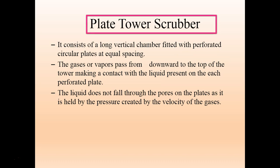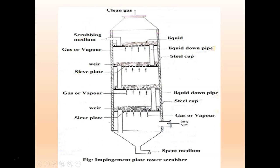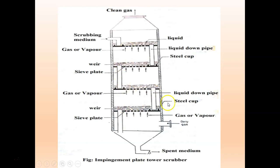Next is the plate tower scrubber. It consists of a long tower with several circular plates with perforations. The golden circular plates have gaps between them which are the perforations, or pores. Through these pores, the polluted gas enters. Polluted gas enters through the inlet and passes through each stage before the final clean gas is let out.